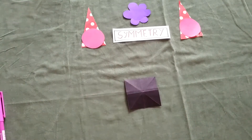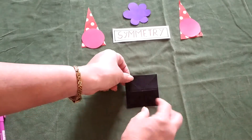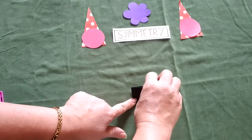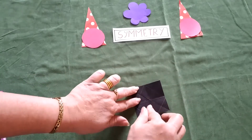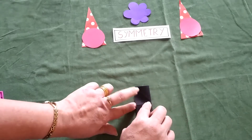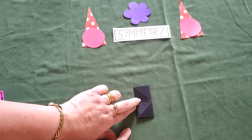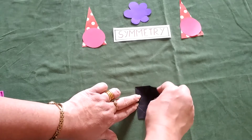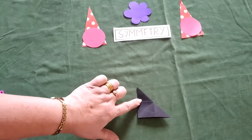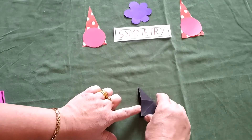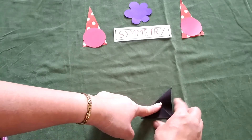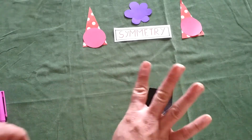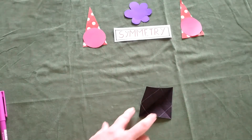Now take the square. Fold it in half — this gives one horizontal line of symmetry. Open it and fold along the length — this is another line of symmetry. Now fold along one diagonal; the two parts cover each other, giving the third line of symmetry. Fold along the other diagonal for the fourth line of symmetry. So a square has four sides and four lines of symmetry.